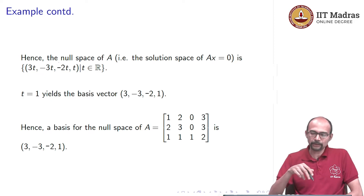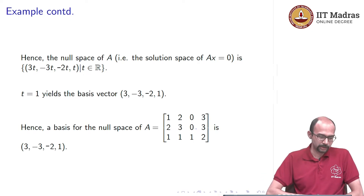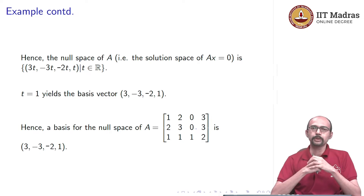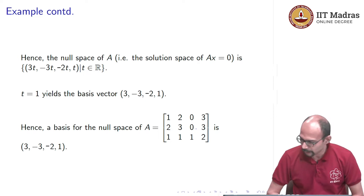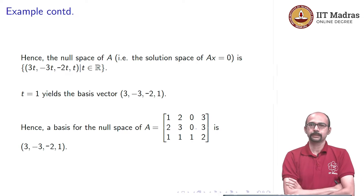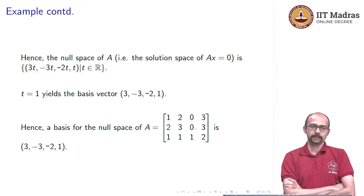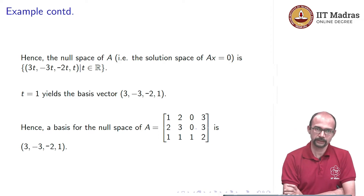You can check that this is inside the null space by multiplying it by A as a column and seeing that the result is 0. So we have done two examples of computing the nullity and null space basis of a matrix. To summarize what we did: we found the general solution for Ax equals 0, then set each ti to 1 and all other tj's to 0, and each such assignment gives a basis vector.